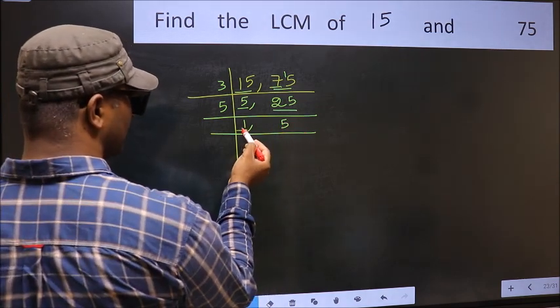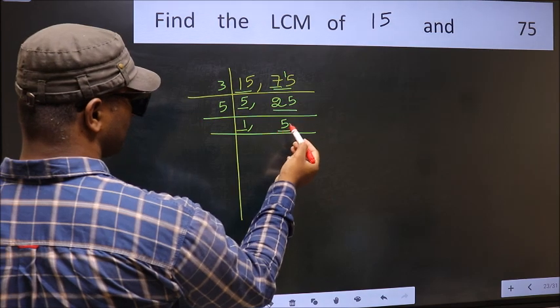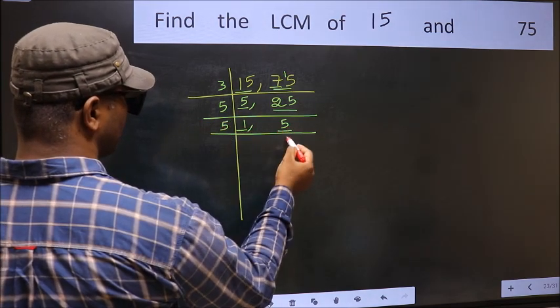Now we got 1 here. So focus on the next number 5. 5 is a prime number, so 5×1=5.